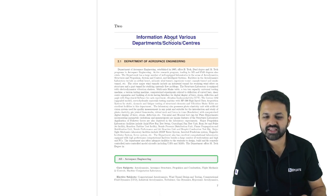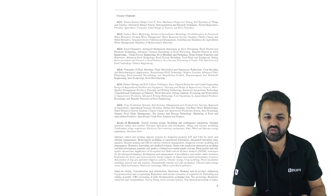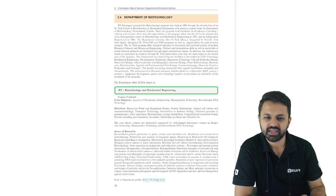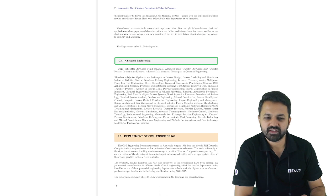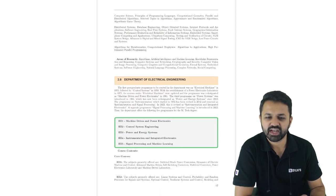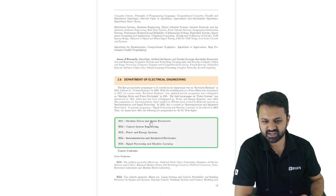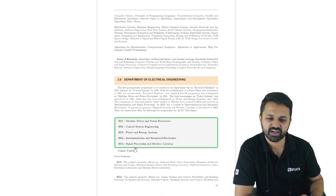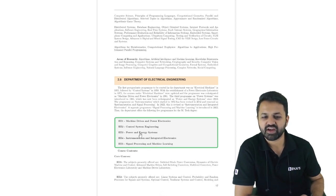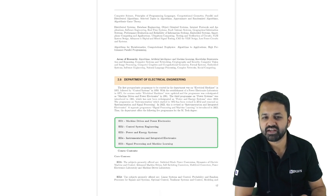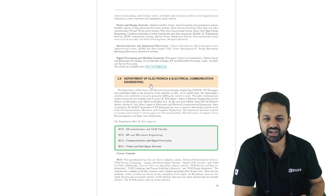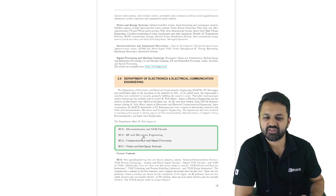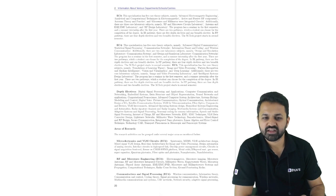Here are the departments available. Under the department of Electrical, there are five branches: Machine Drive and Power Electronics, Control System Engineering, Power and Energy System, Instrumentation and Integrated Electronics, and Signal Processing and Machine Learning. Under the department of Electronics and Electrical Communication Engineering, there are four branches: Micro Electronics, RF and Microwave, Communication and Signal Processing, and Vision and Intelligent System.